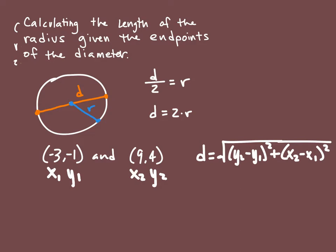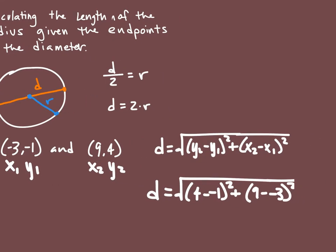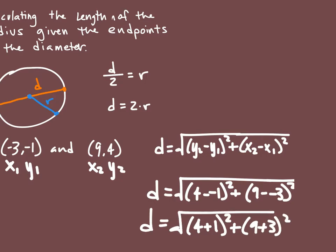So I'm going to plug these values in, and the distance that we're going to get from this: we got 4 minus (-1) quantity squared plus 9 minus (-3) quantity squared.